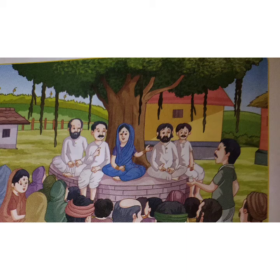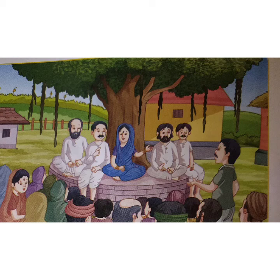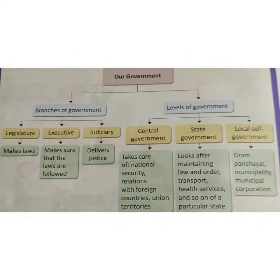Now let us revise what we have learned so far. We have learned that the government in India has three branches: the legislative, the executive, and the judiciary. The government in India functions at three levels: central, state, and local. The local government is the government formed by the people of a village, town, or city. At the village level, the local self government is known as the Gram Panchayat. In towns and cities, the local self governments are called municipalities and municipal corporations. I hope that you have understood this topic. Thank you.